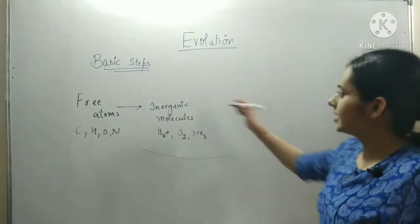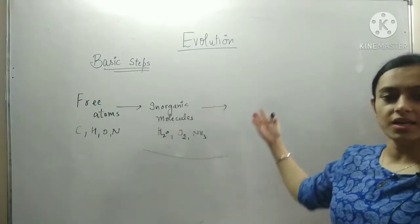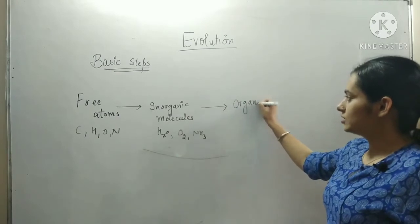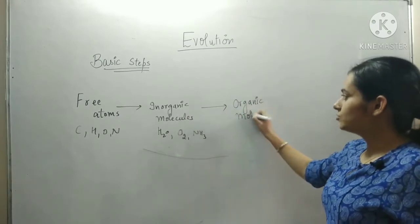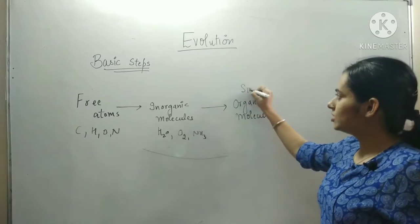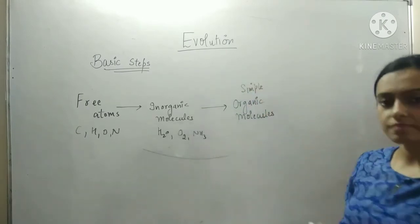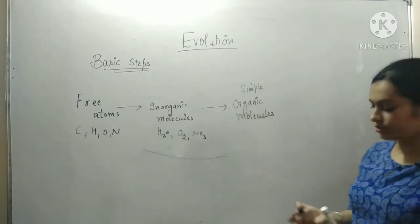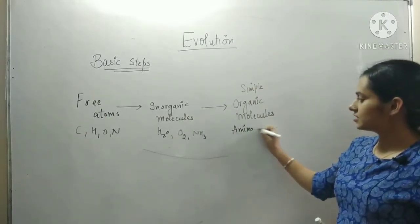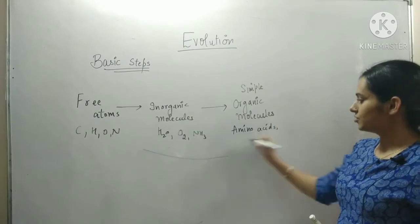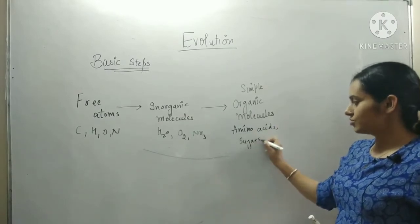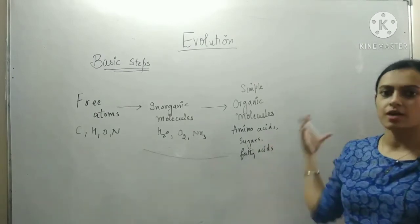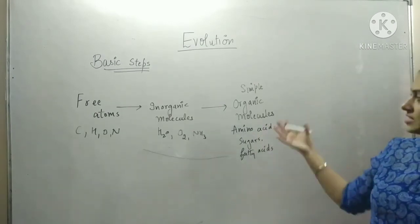After inorganic molecules, the next step in evolution is the formation of organic molecules. First comes the formation of simple organic molecules — also called basic organic molecules — like different types of amino acids, the formation of sugars, and the formation of fatty acids. These can be considered as monomers or basic components.